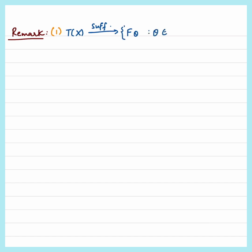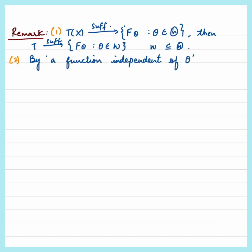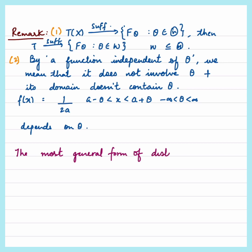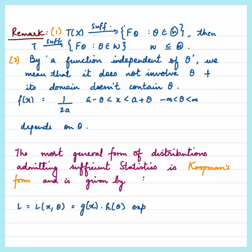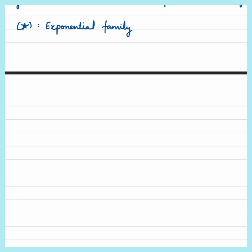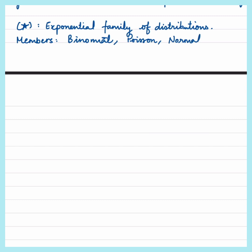A few more important remarks: if T is sufficient for theta belonging to a set, then T is also sufficient for any subset of that set. When we say a function is independent of theta, we mean not only that theta doesn't appear in the expression, but also that the domain of the function doesn't involve theta. For example, a uniform distribution is not independent of theta in this sense. Finally, it's important to note that the most general class of distributions admitting sufficient statistics is the Koopman-Darmois family, also known as the exponential family of distributions. Now let's start doing some interesting questions together.